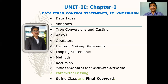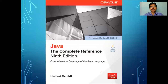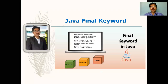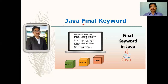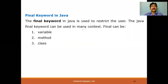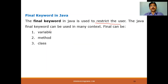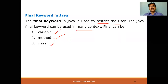Now let me talk about the next topic — the final keyword. We are following the Java Complete Reference book and other resources. The final keyword in Java means something is fixed — there is no change at all. Once a variable, method, or class is declared as final, there is no way to modify or alter it. The final keyword is used to restrict the user, and it can be applied in three contexts: a variable, a method, and a class.